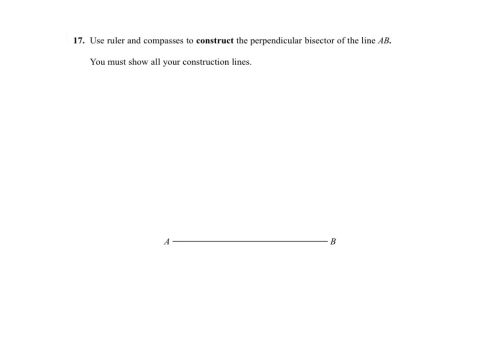Question 17. You need to construct the perpendicular bisector of the line AB. This means the line which cuts AB into two equal parts.